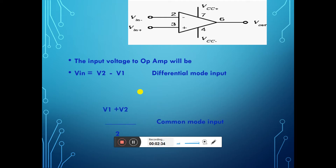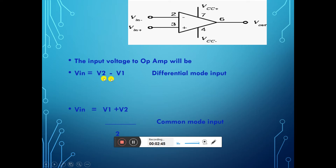In an op-amp, there are two types of input. One is known as differential mode input and another is known as common mode input. In differential mode input, we amplify the difference of the inverting and non-inverting terminal. In common mode input, we amplify the average of the signal. Mostly, we amplify the difference of the input signal.